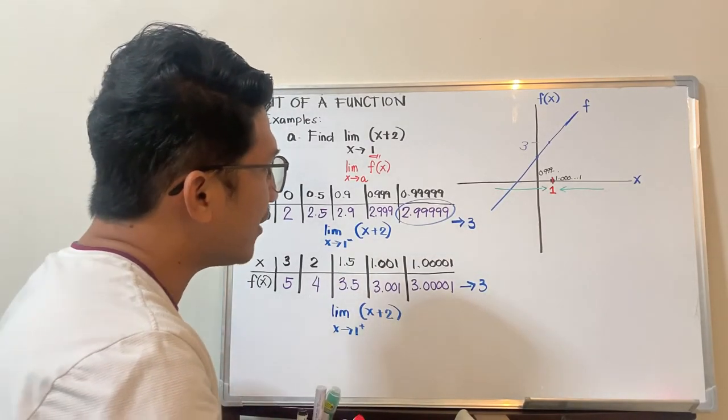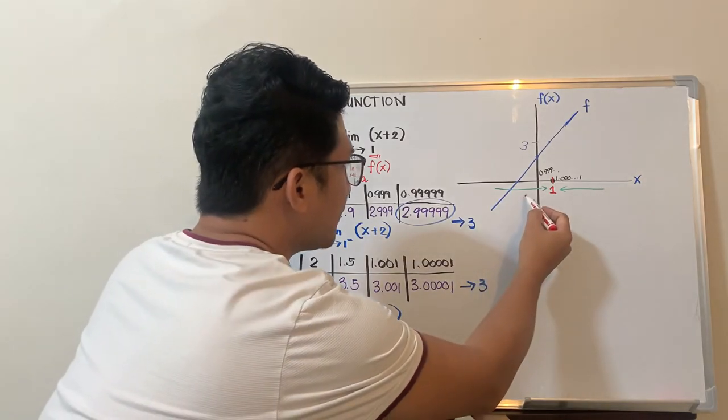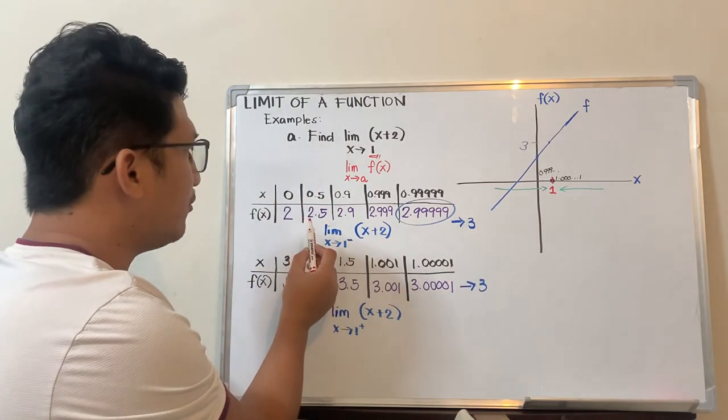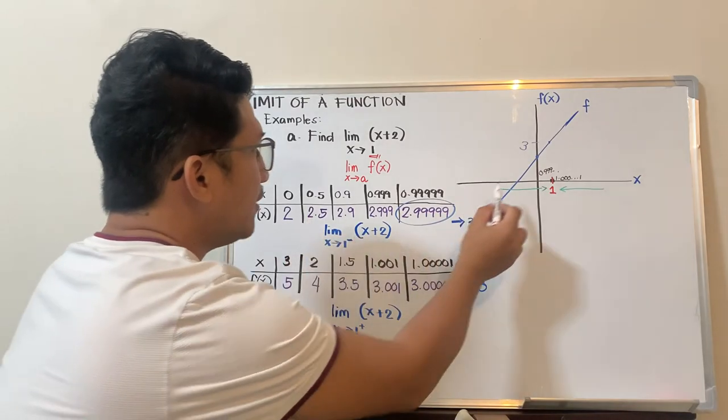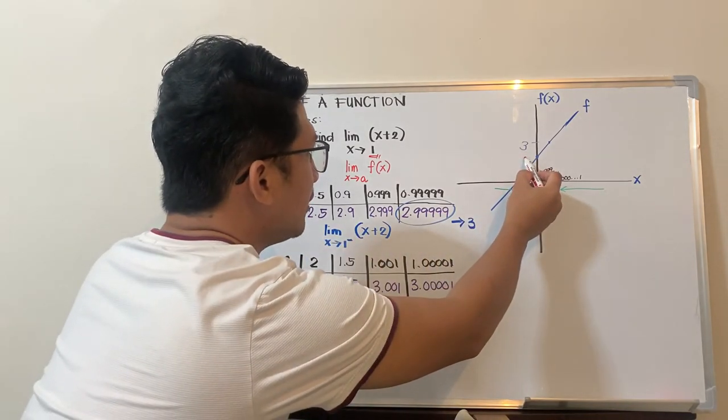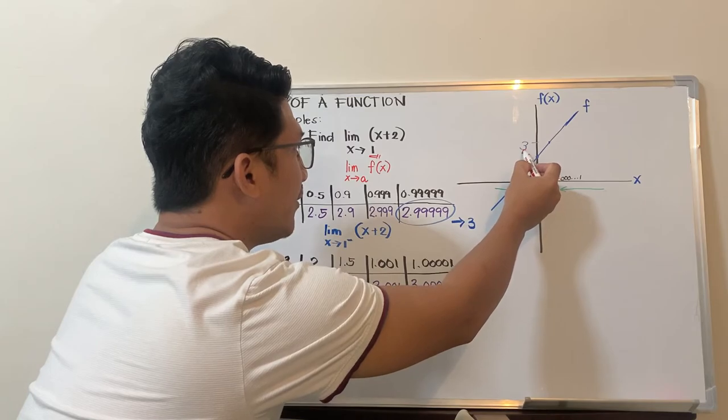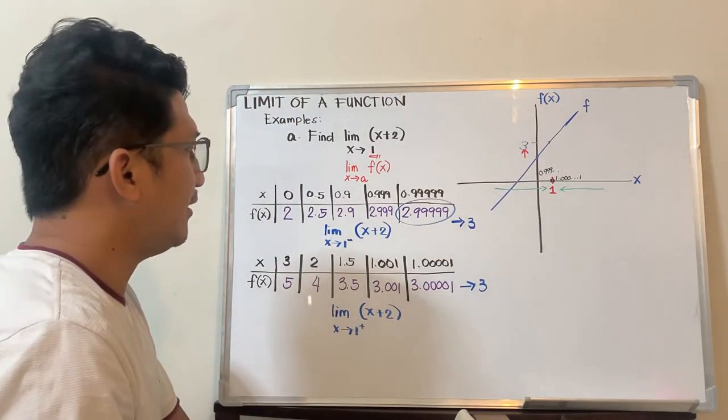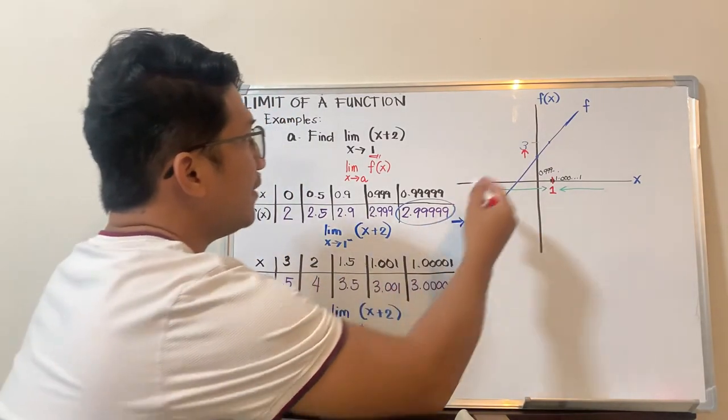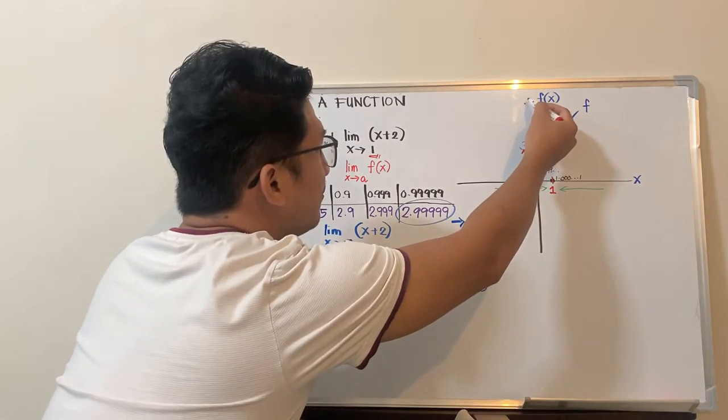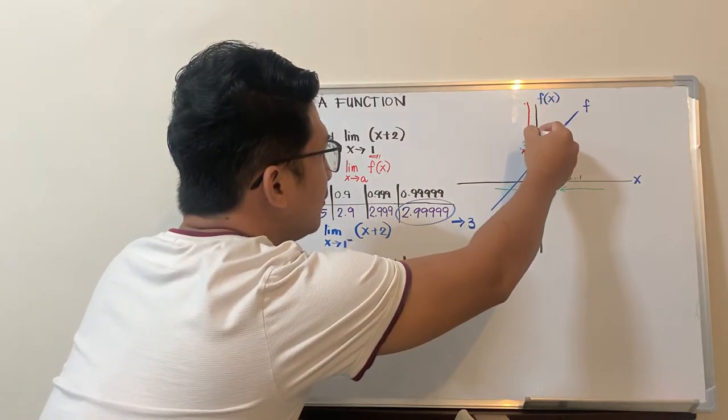So it seems like if we look at 1, 2, 3, the illustration is that we're squeezing 3 in the f(x). From the left, we have 2, then 2.5, 2.9, until 3.